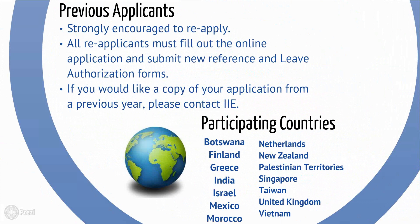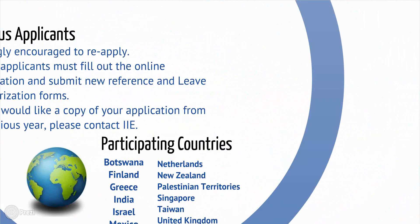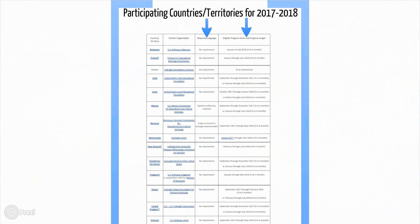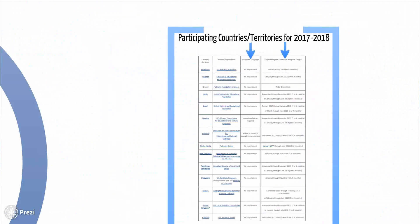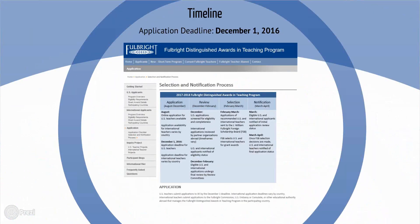Reapplicants must also submit new reference and leave authorization forms. Here is a list of the participating countries for the 2017-2018 school year. Visit our website to view language requirements, eligible program dates, program length, and more details about the participating countries. This is a basic overview of the selection and notification timeline found on our website. The application deadline for the 2017-2018 program for U.S. teachers is December 1, 2016.